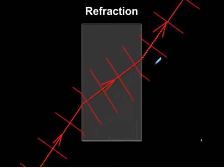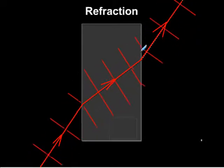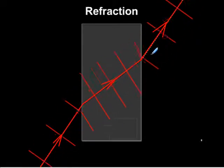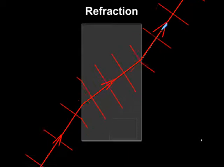As it comes out of the block, it speeds up again as it goes from the dense material into the rare material. This again makes it change direction.